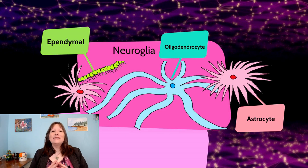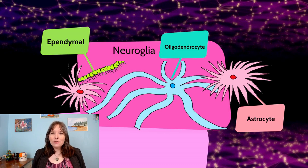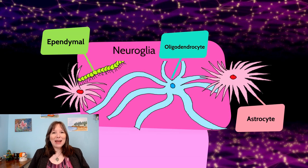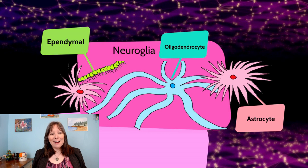Now we've fully learned about the neuron, let's talk about the support structures around the neuron. There are also lots of little cells called glia cells or neural glia cells in our nervous system. These are different from neurons because they don't seem to have an action potential or the same type of electrical neurological relay of information, but they're very important to the success of our nervous system. We're finding out more and more about glial cells all the time.